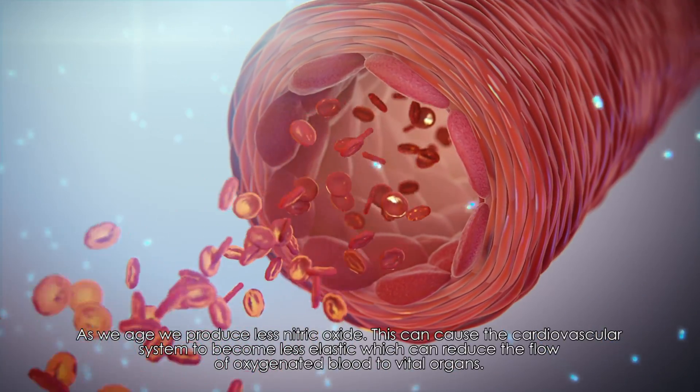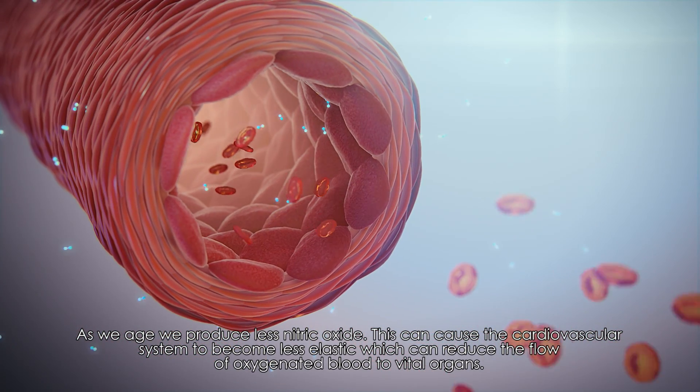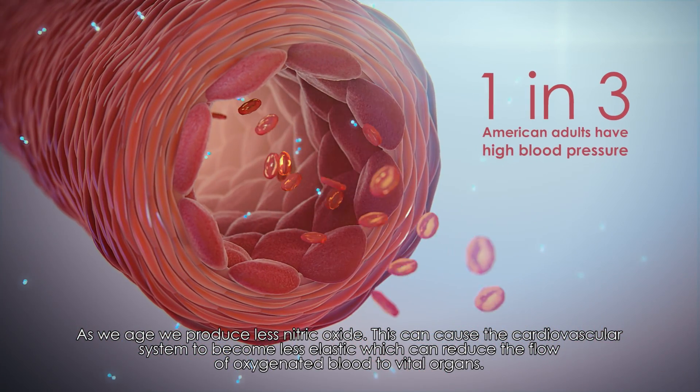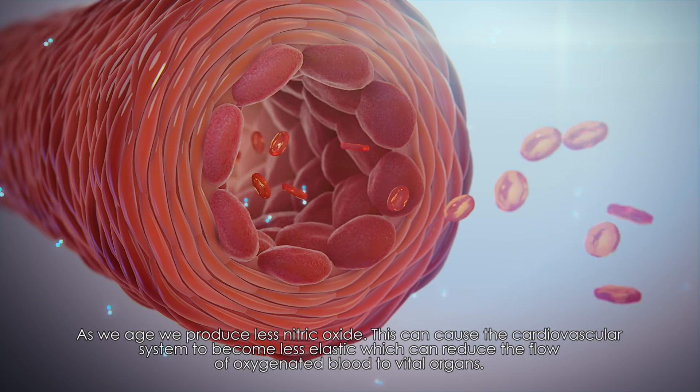As we age, we produce less nitric oxide. This can cause the cardiovascular system to become less elastic, which can reduce the flow of oxygenated blood to vital organs.